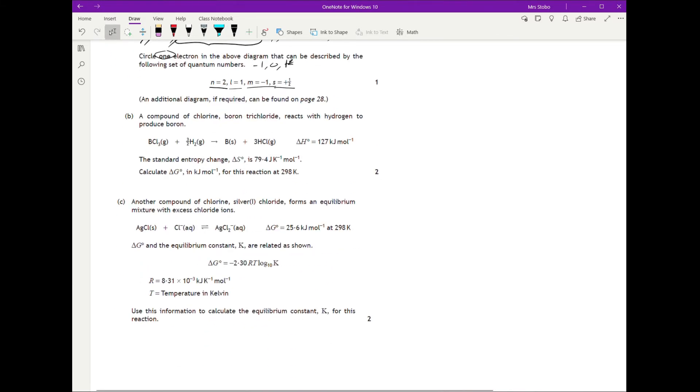Okay, right, a compound of chlorine boron trichloride reacts with hydrogen to produce boron. Standard entropy change, delta S is 79.4 joules kelvin per mole. Calculate delta G in kilojoules per mole for this reaction at 298K. Okay, right, it's just a two marker. But when I say just, that means a fair amount of work for an advanced higher calculation, obviously.